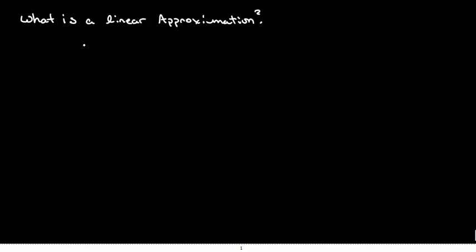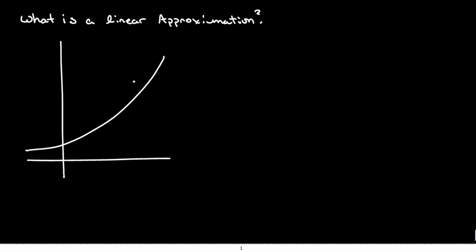So sometimes what we do is, let's say we've got a function. I'm going to go ahead and draw one out. Let's say it looks something like this — I'll call it f of x. This is the x-axis and this is our f(x)-axis, or our y-axis. Let's say we've got a starting point here, and I'm just going to call it a. Since this function gives me the output values for the input values, this is going to be f at a — the function evaluated at the value a.